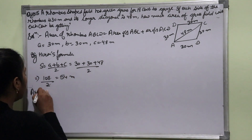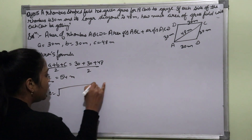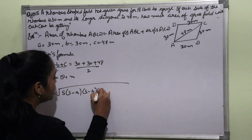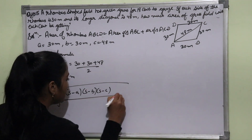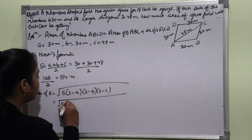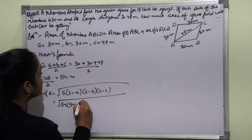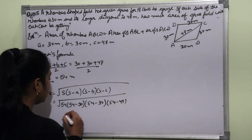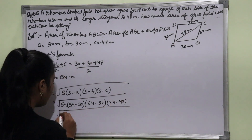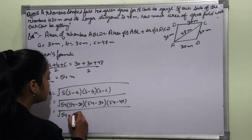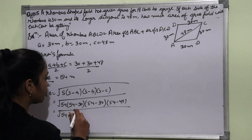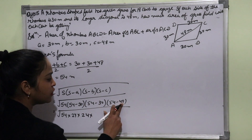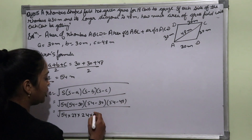Now we find the area of triangle. The formula is √(S × (S−A) × (S−B) × (S−C)). S = 54, so: S−A = 54−30 = 24, S−B = 54−30 = 24, and S−C = 54−48 = 6.